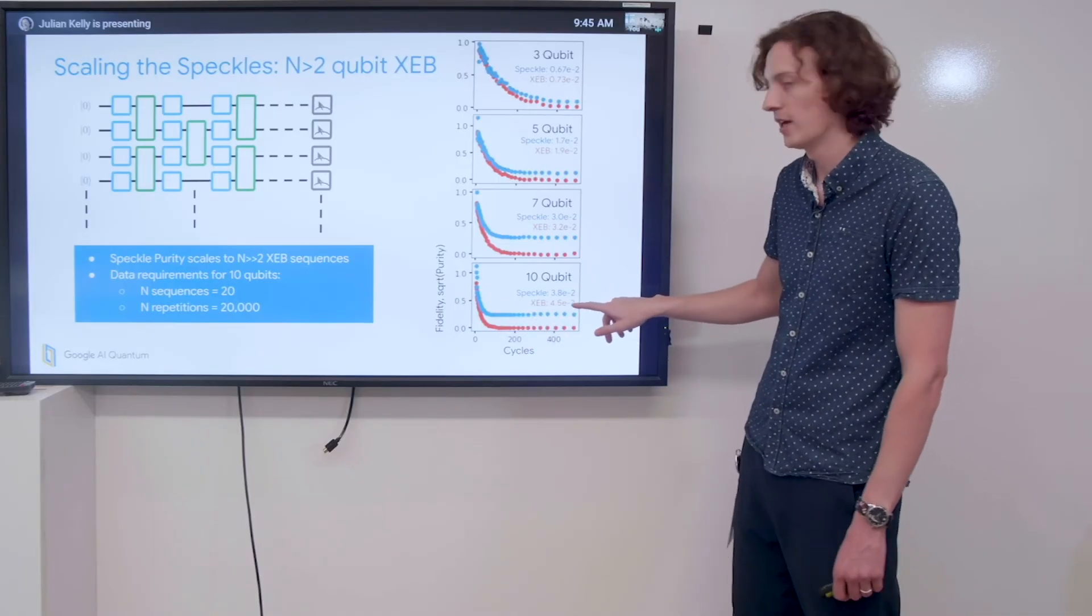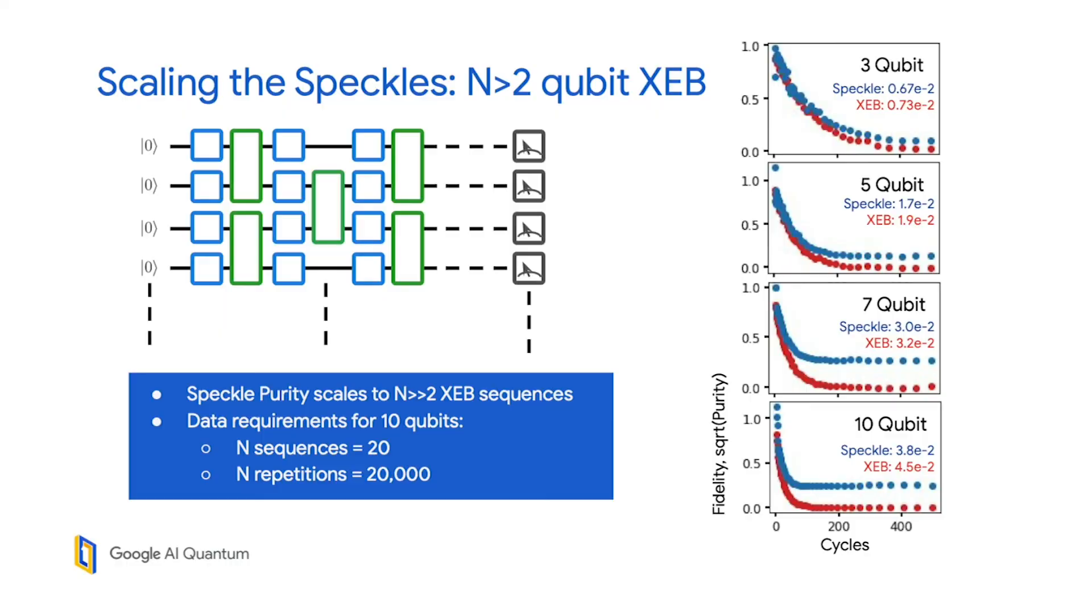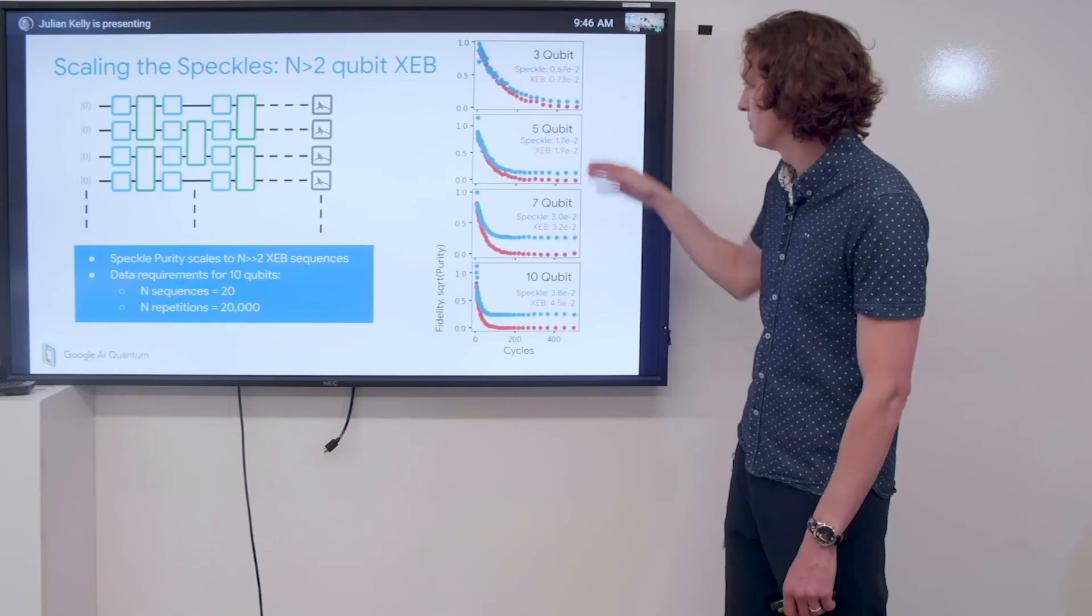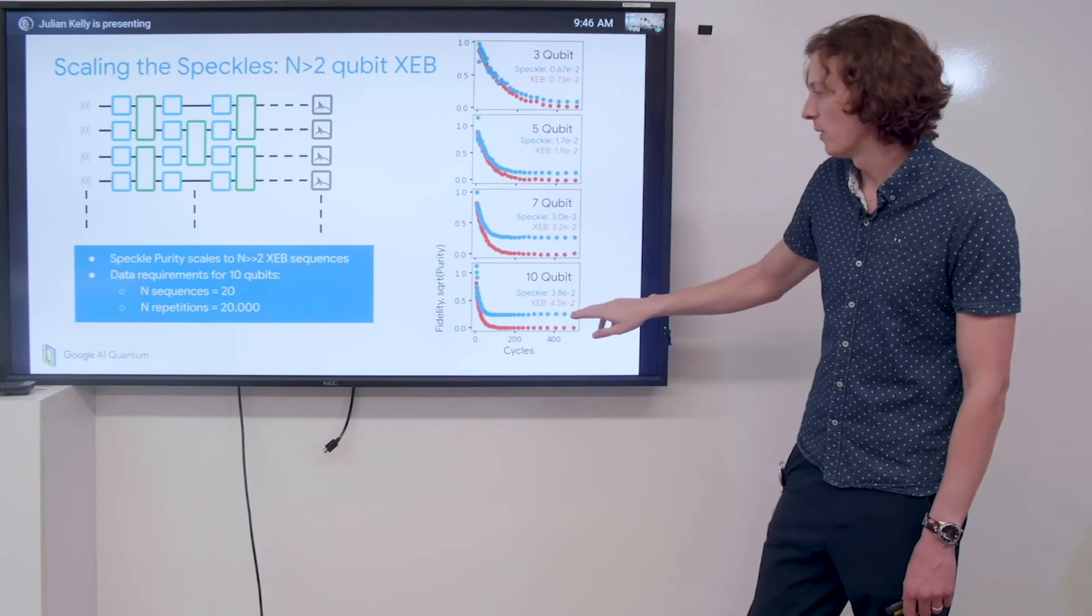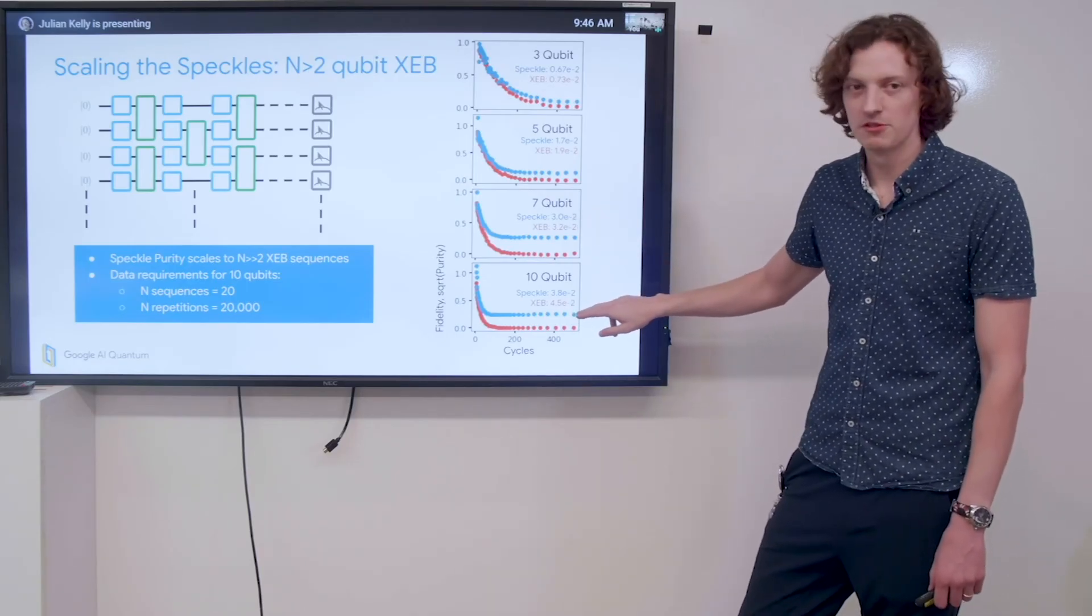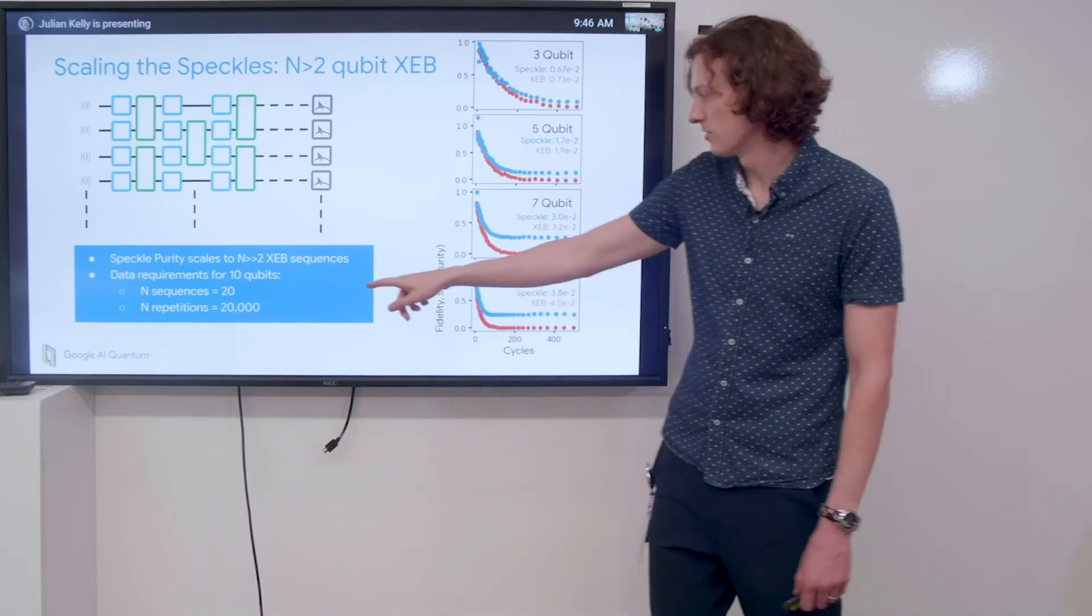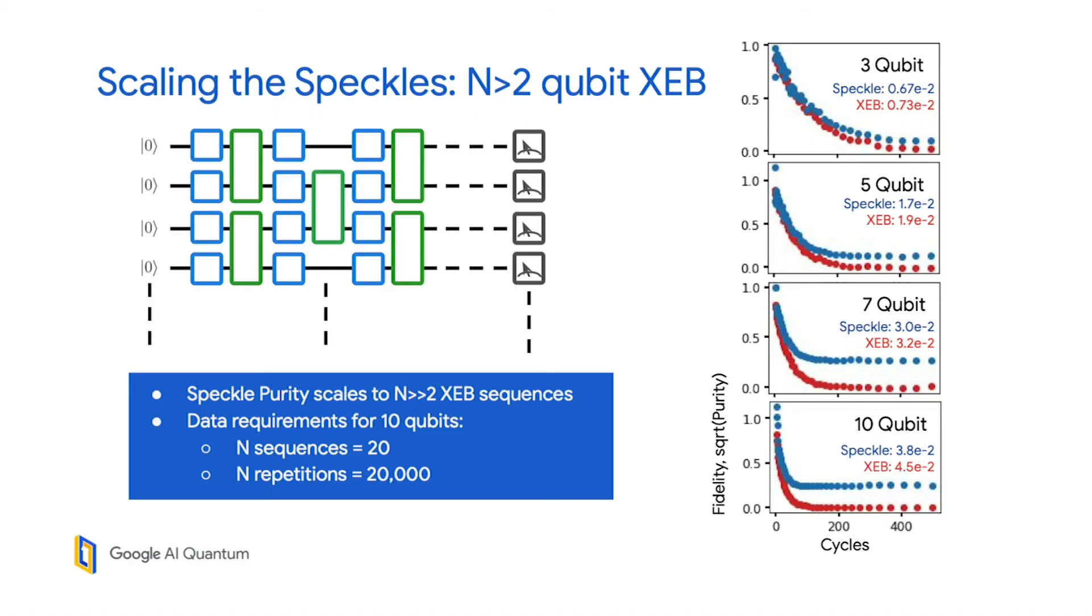I want to point out that going all the way up to here, we use kind of standard numbers for the number of sequences and stats. But at this point, we started to feel the exponential number of samples that we needed—we had to crank up the repetitions up to 20,000. But even that is really not that much for extracting purity for a 10-qubit system.